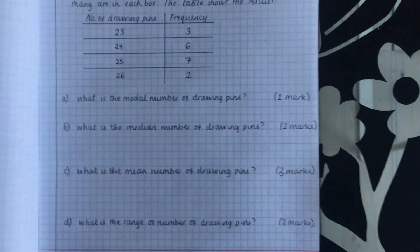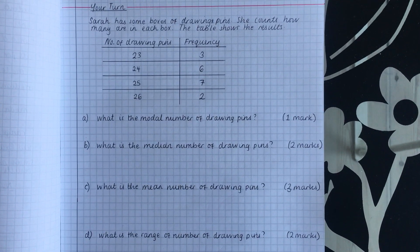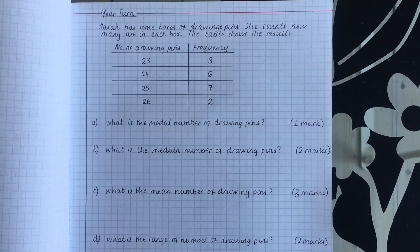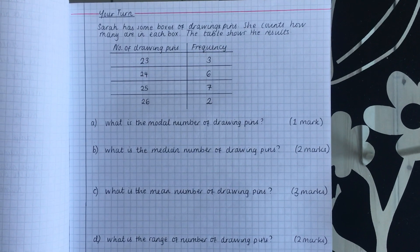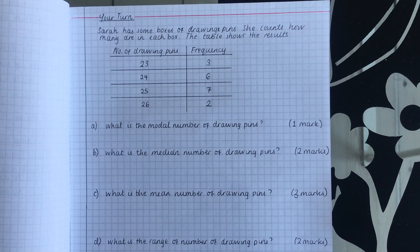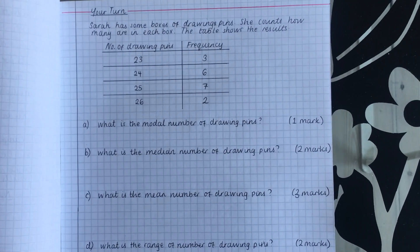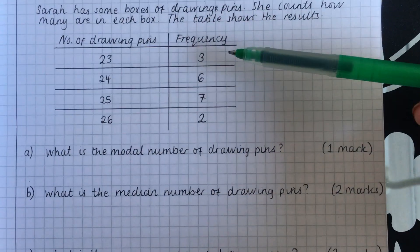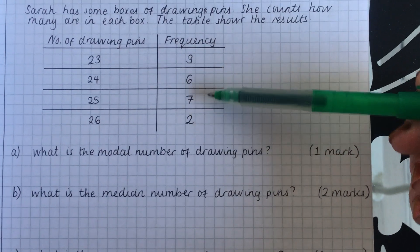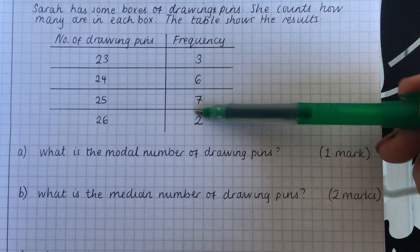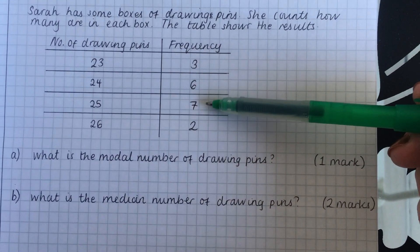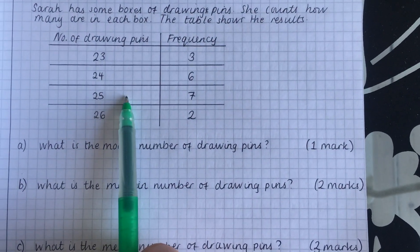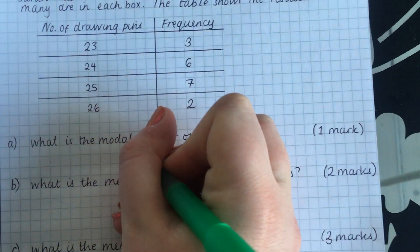So now we're going to do a your turn question. So here's the whole question. You can do that on your own and pause the video. And then we're going to go through the solutions. So starting off with the modal number of pins, not forgetting that modal means mode. Now, the most frequent, once again, we check in the frequency column. Seven is the highest number. That's the most frequent. But don't forget, seven isn't the mode. The mode, therefore, is 25. 25 drawing pins. So the mode is 25.